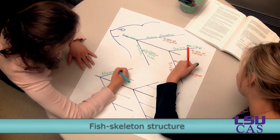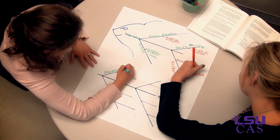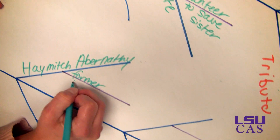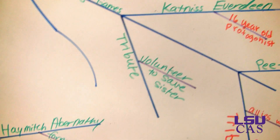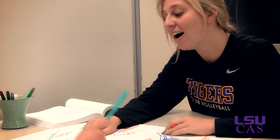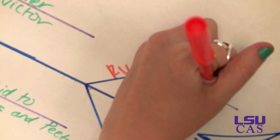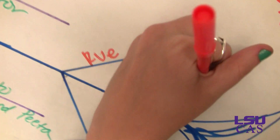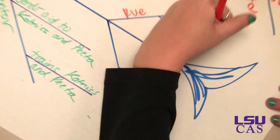A herringbone map is set up like a fish skeleton. The backbone of the map represents the main idea or concept. The spine of the map represents the questions about the main idea. Information supporting each question is written next to each spine.